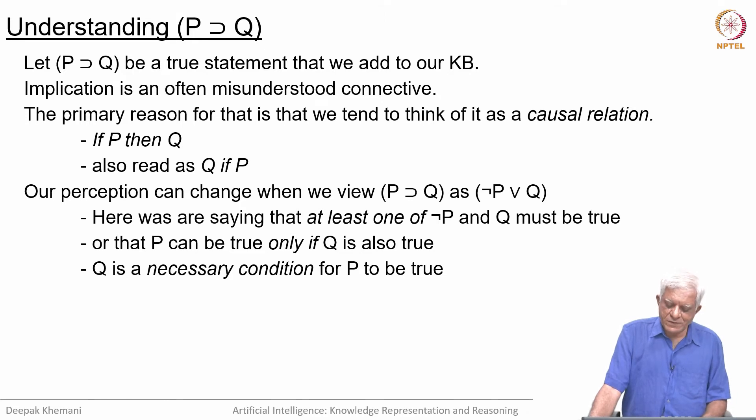Q is a necessary condition for P to be true. Whenever we say P implies Q, we often mean that Q is a necessary condition for P, which means it is necessary that Q be true for P to be true, because if P is true and Q is false, P implies Q would not be true.